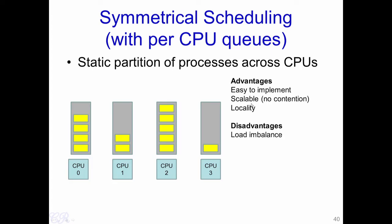Scalability comes from the absence of any locking or serialization of queue accesses. Another advantage is that the scheduling choice is local — CPU 0 is only concerned with its own queue and not any other queue in the system, so decisions are very quick with minimum performance degradation. The drawback is that it can lead to load imbalance, where some CPUs have many processes in the ready state while others, such as CPU 3, have very few — meaning CPU 2 is doing significantly more work than CPU 3.